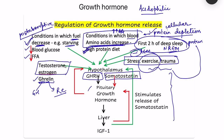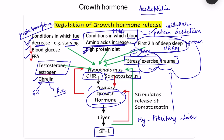There is also feedback regulation. GHRH acts on the pituitary to release growth hormone, which in turn acts on the liver to release insulin-like growth factor 1 (IGF-1) — forming the hypothalamic-pituitary-liver axis. IGF-1 acts as a negative feedback regulator, inhibiting growth hormone release from the pituitary and stimulating somatostatin release from the hypothalamus.